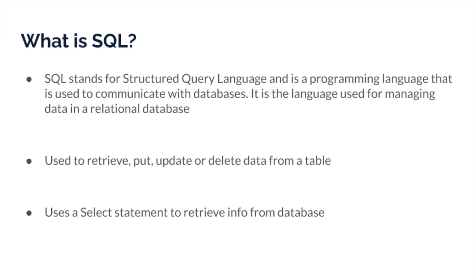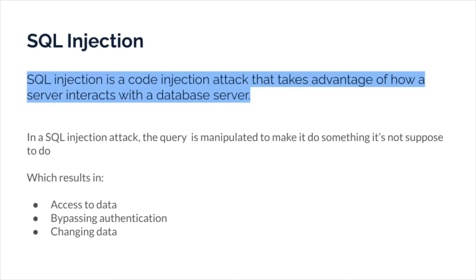So what happens in a SQL injection attack? SQL injection is a code injection attack that takes advantage of how a server interacts with the database server — how a web application server interacts with a database server. In a SQL injection attack, the query is manipulated to make it do something it's not supposed to do. Some possibilities include access to data, bypassing authentication, and changing data. SQL injection is a very dangerous attack if successfully executed.